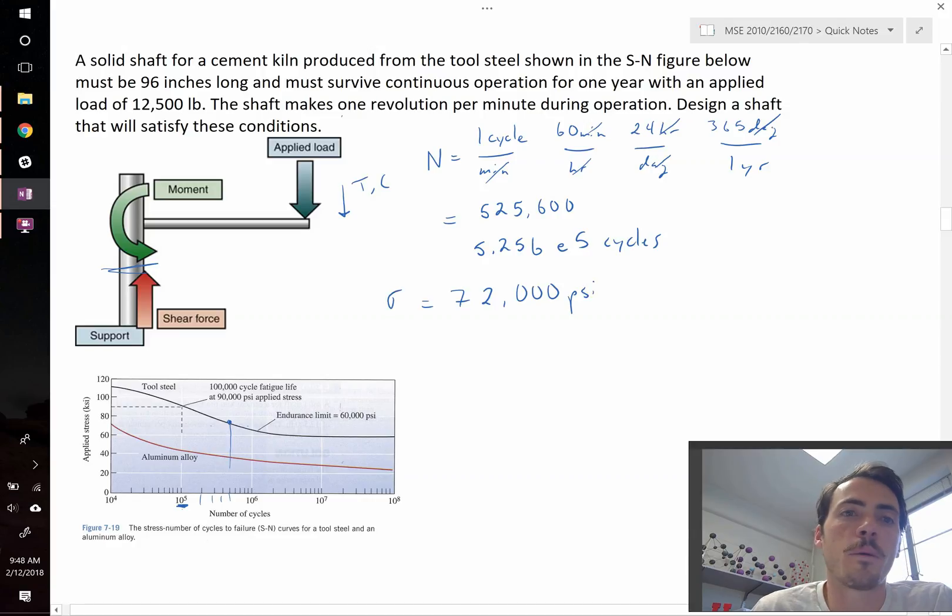Now we're told in the problem, we're given the length of this rod and we're told what the force is. And then, remember, it wants us to design a shaft. So what we need to design is really the diameter. Fortunately, we can figure out what the stress is for one of these rods that are under this rotation force.